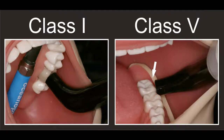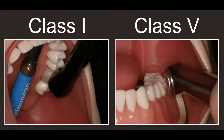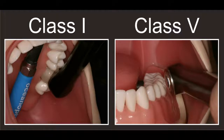Here we can see an example of a curing light with a light guide — note how difficult it is to access the Class I and Class V locations. In contrast, another curing light accessed these locations relatively easily. Even so, 20 operators using this particular curing light for the same curing time delivered between 4.4 and 17.4 joules per centimeter squared.